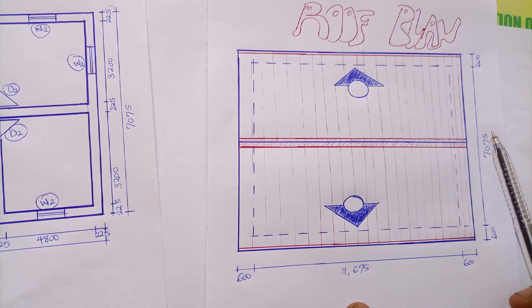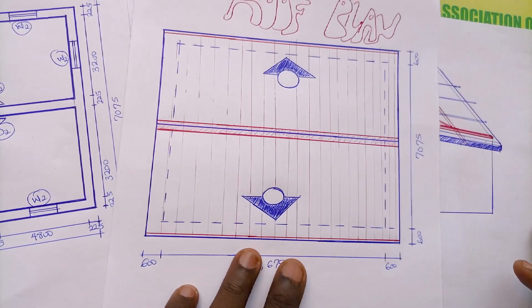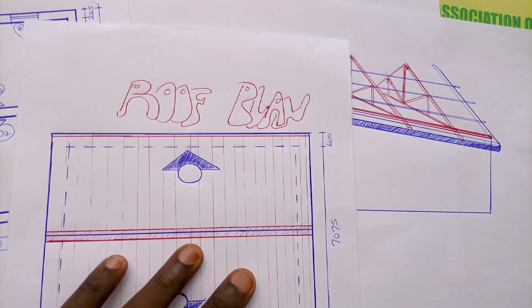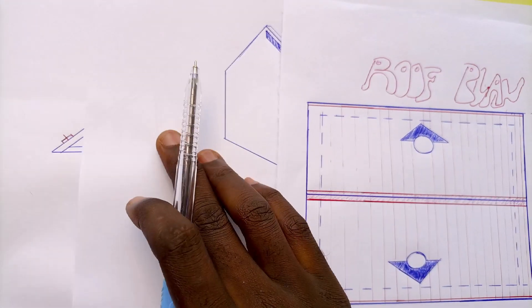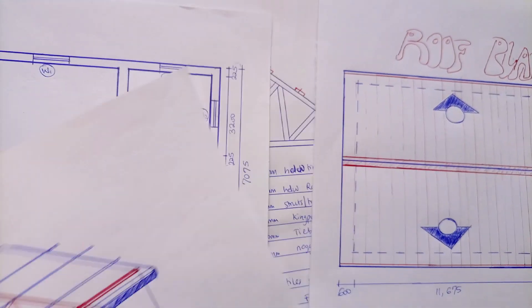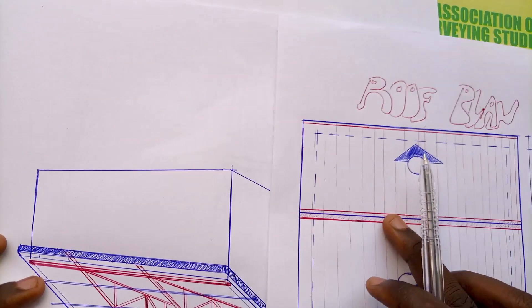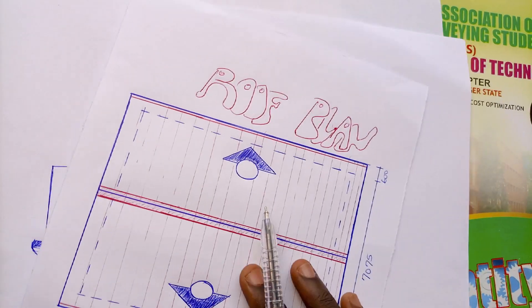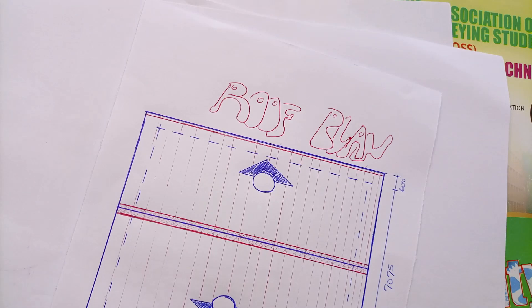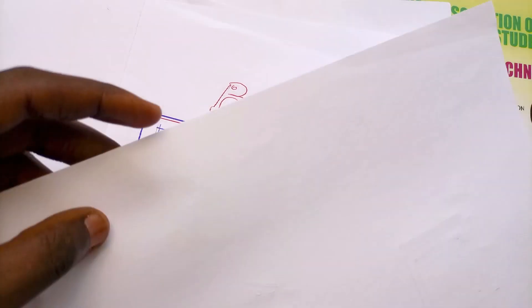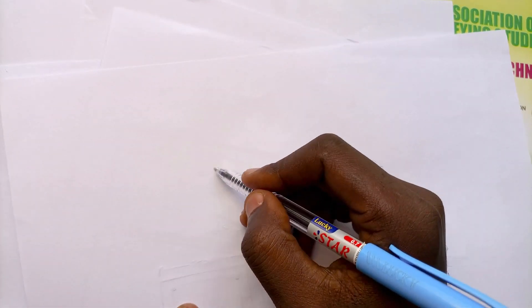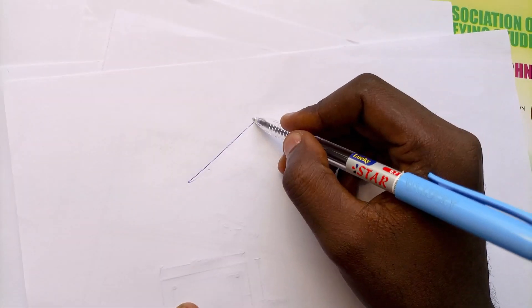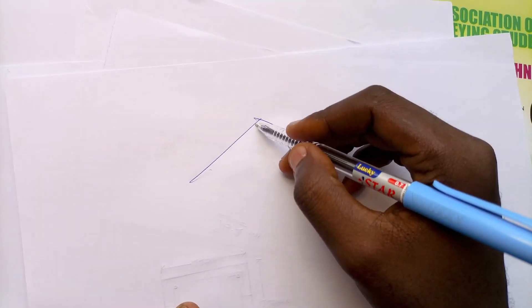When you have a building, the roof usually projects out beyond the wall. This projection — the distance between the wall and the outermost element of the roof — is what we refer to as the roof projection.